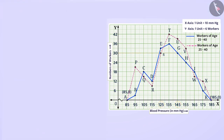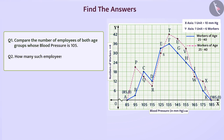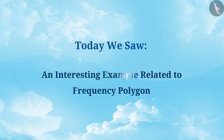Now find the answers to the following questions yourself: compare the number of employees of both age groups whose blood pressure is 105 mm Hg, and find how many employees between the ages of 25 and 40 have a blood pressure of 125 mm Hg. Today we saw another interesting example related to frequency polygon.